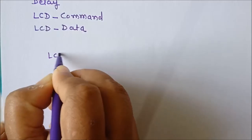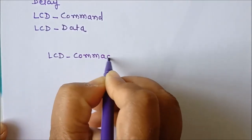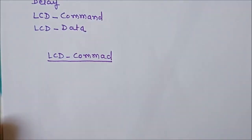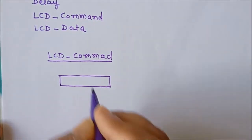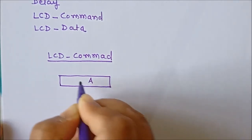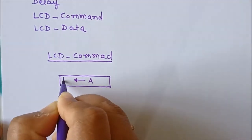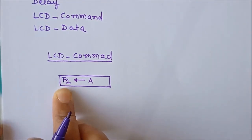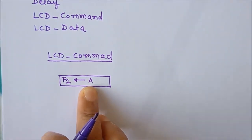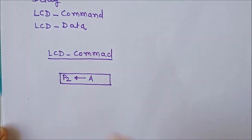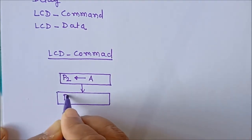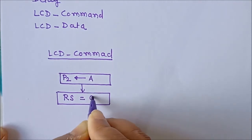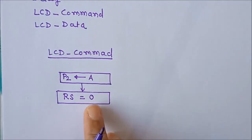We will draw a flowchart for the LCD command subroutine. First, we assume the command is stored in the accumulator, and we place the accumulator contents on port P2, which is our data bus. We store the command — maybe 38H, 0EH, 01H, or a character address — on data bus port P2. After that, we select the register: since we are writing a command, RS must be at logic 0, so we send RS = 0.